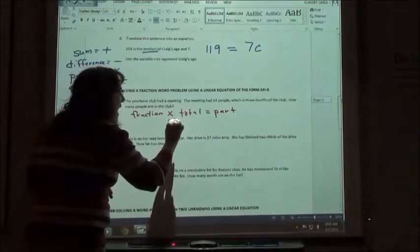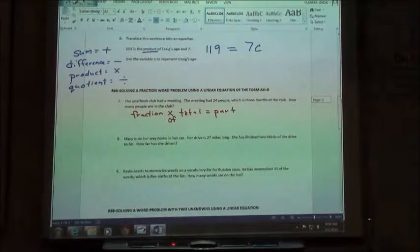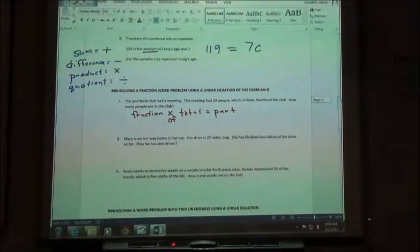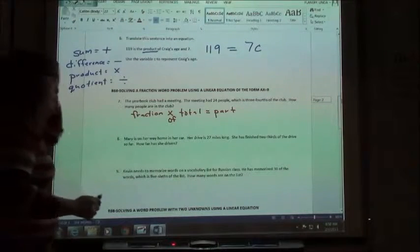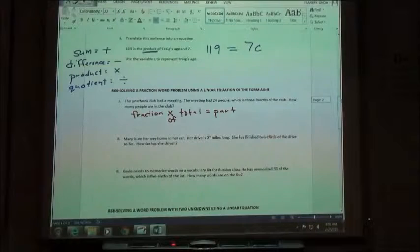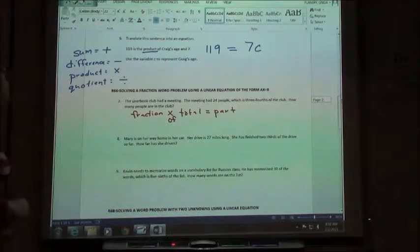Usually it'll say half of something or two-thirds of something. 'Of' means times in algebra. And so it says here the yearbook club had a meeting. The meeting had 24 people, which is three-fourths of the club. How many people are in the club?